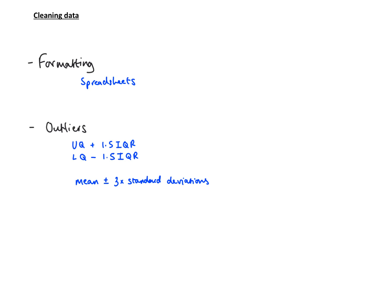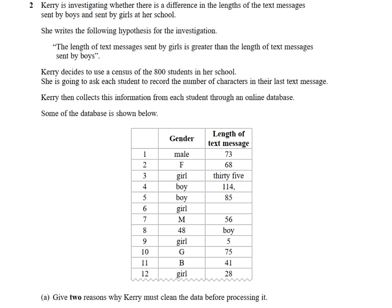Let's look at some examples. Here's a table that, if it were in a spreadsheet, has many problems. We've got length of text message: 73, 68, 35 — but in a spreadsheet I wouldn't be able to add this column because '35' here has a comma, and 'boy' appears under gender where data looks swapped. There are lots of ways we need to clean the data before we can find the mean or add values up.